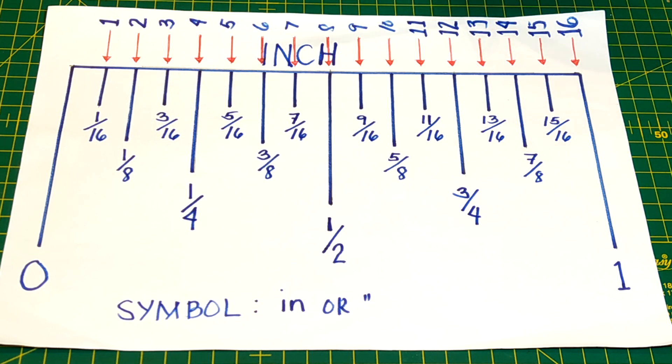The fifth line is 5/16, and the sixth line is 3/8 or 6/16. The seventh line is 7/16.